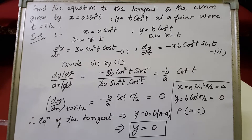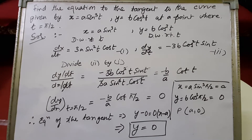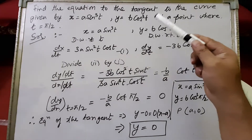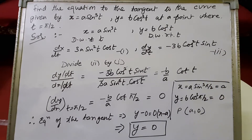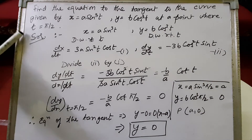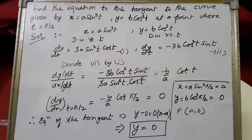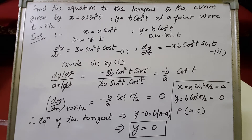Let's see another sum. It is given: find the equation of the tangent to the curve given by x equals a sine cubed t, y equals b cosine cubed t at a point where t equals pi by 2. This is the equation in parametric form. To find the equation of the tangent, first we calculate the slope of the tangent, then the point at the given parameter value, then the slope at that point, and finally the equation of the tangent.